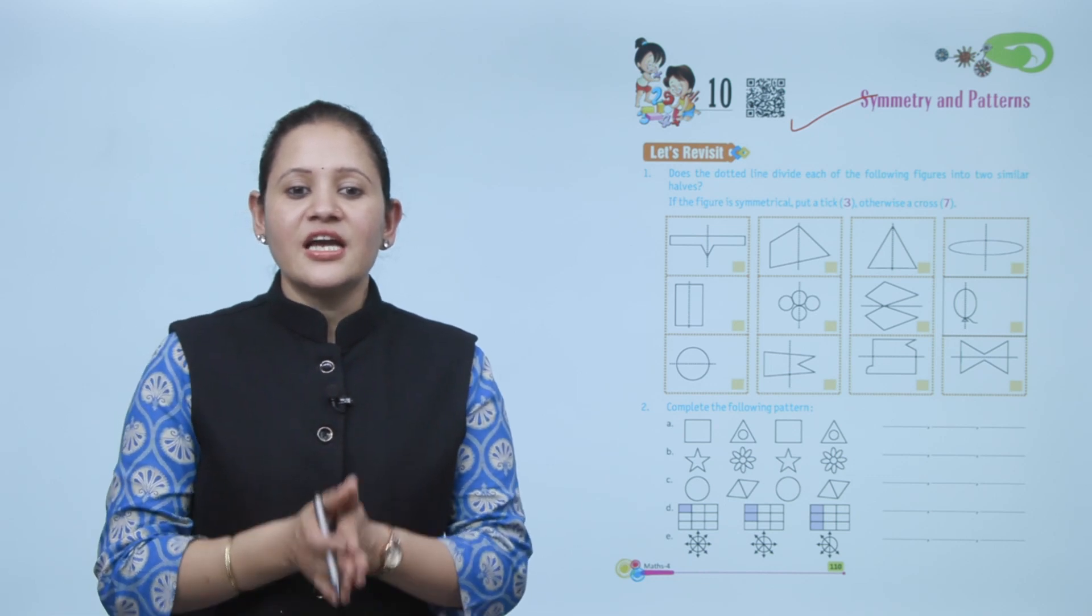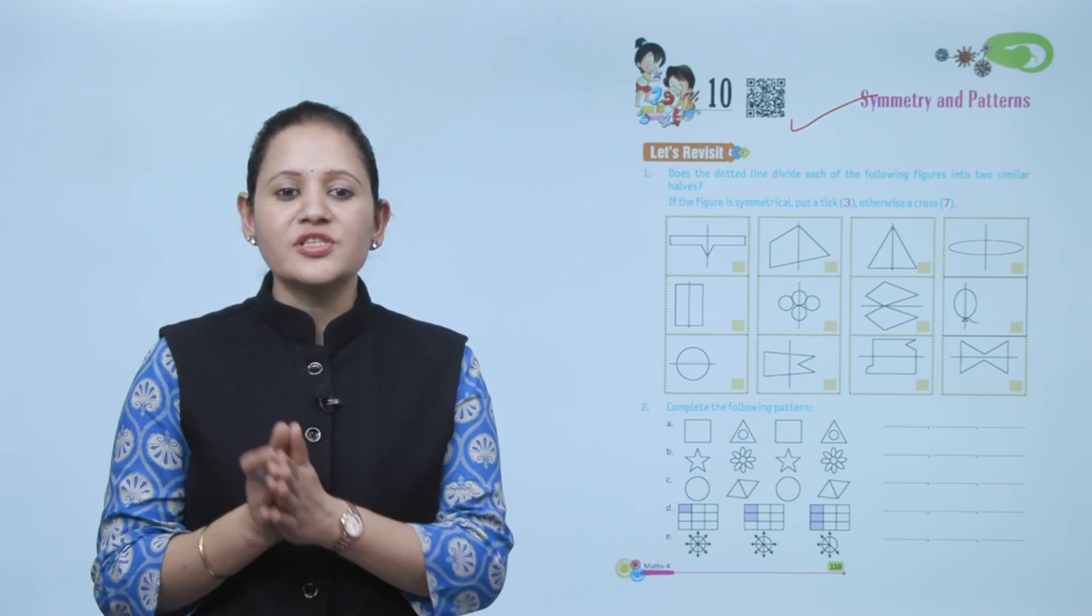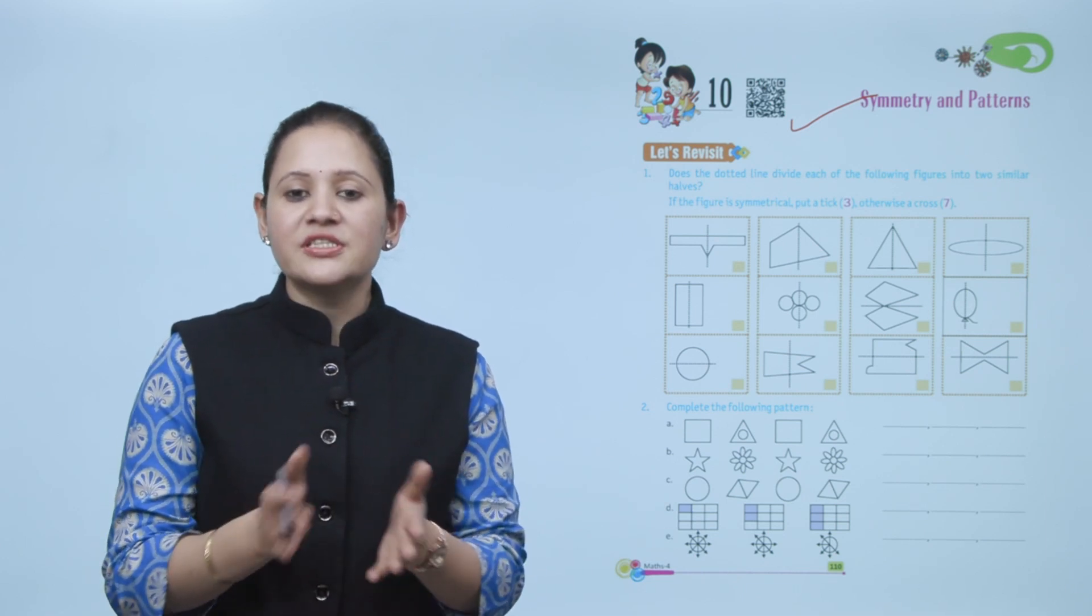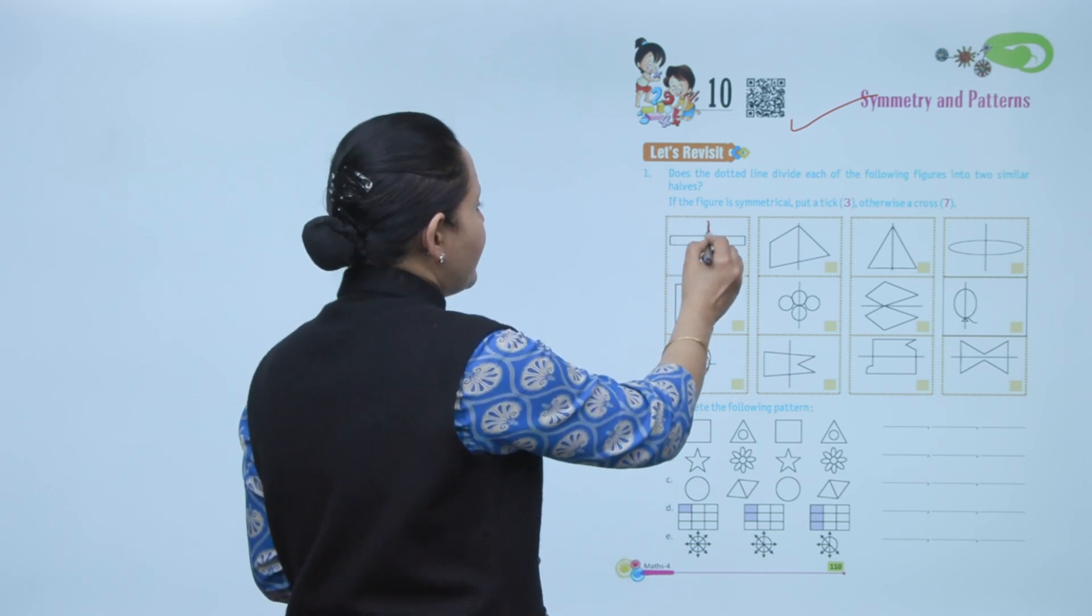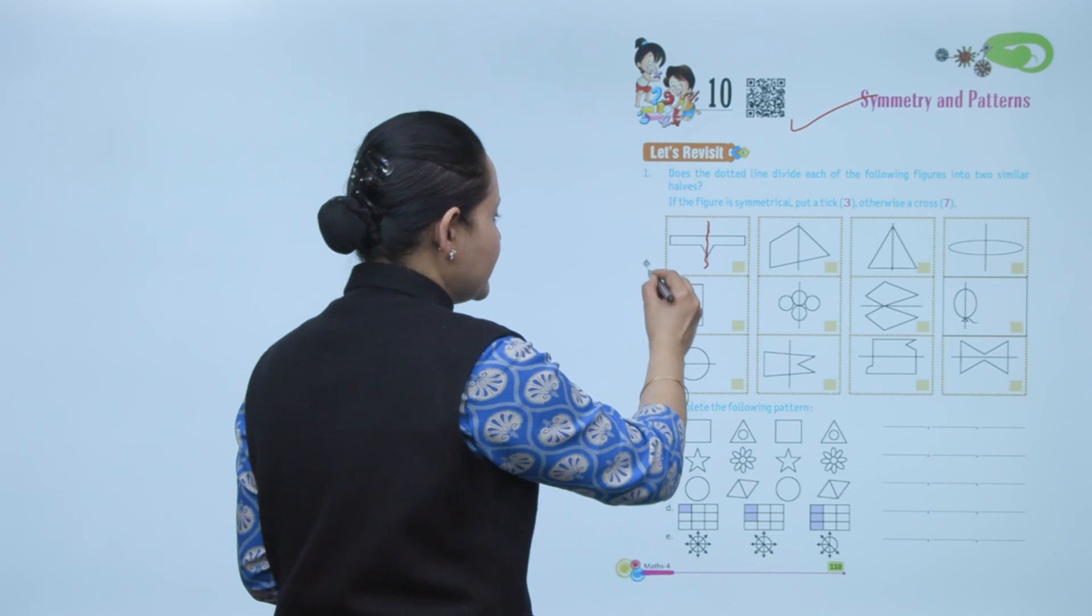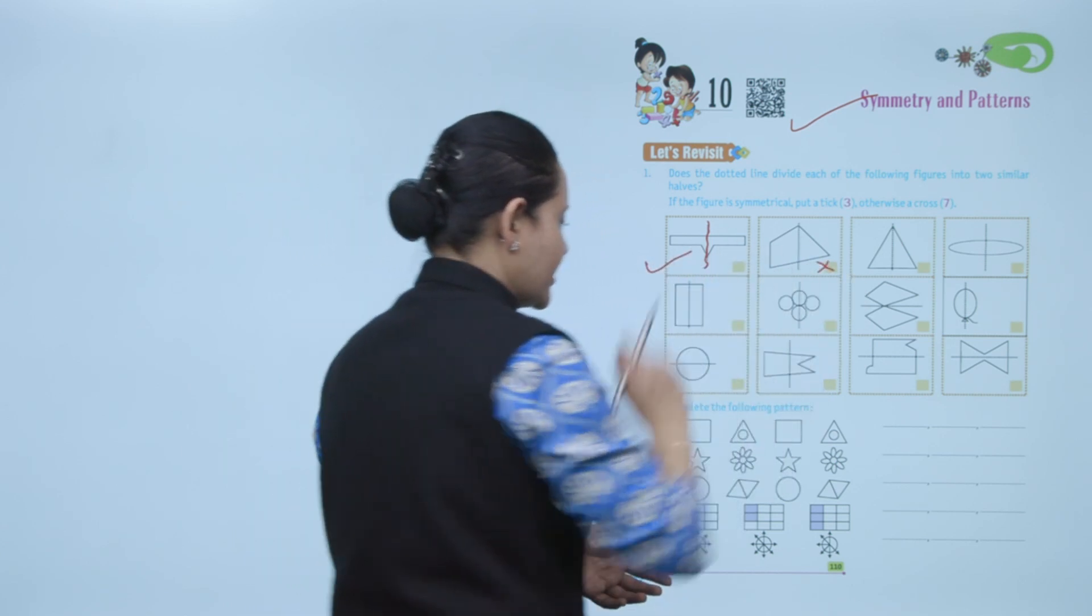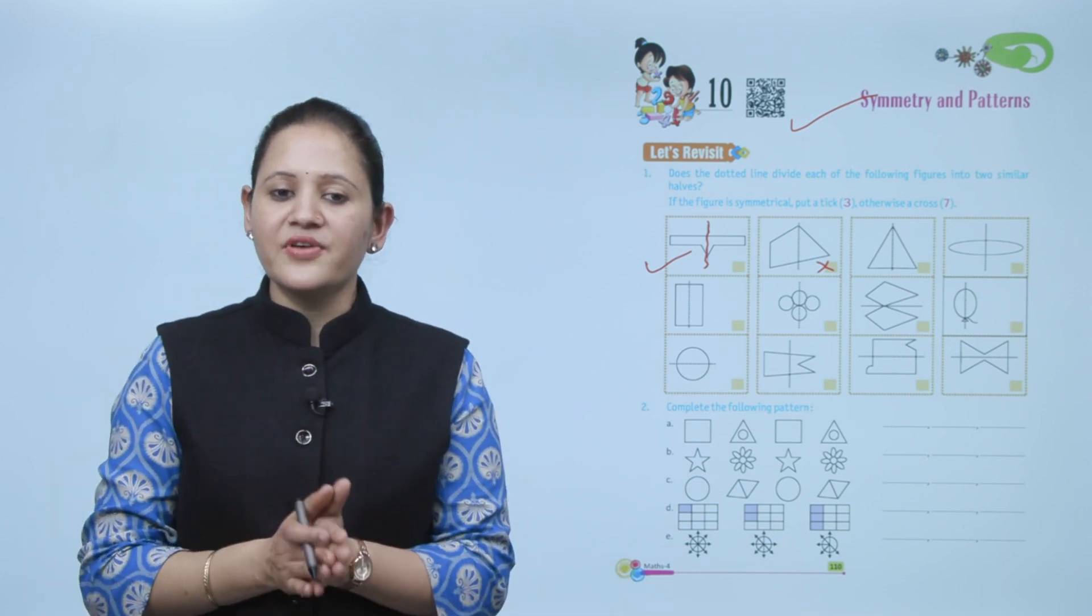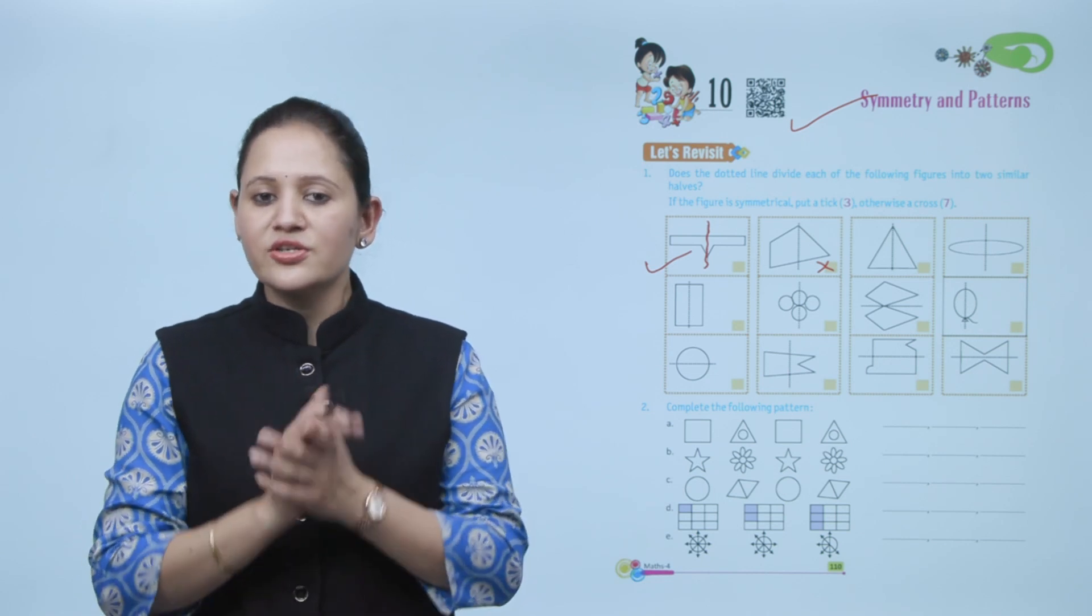Let's revisit: does the dotted line divide each of the following figures into two similar halves? If the figure is symmetrical, put a tick, otherwise cross. Here the dotted line is dividing into two equal halves, so they are symmetrical - put a tick. Here the parts are not equal, so we'll cross it. This way you can identify whether the dotted line is dividing it into two equal parts or not.